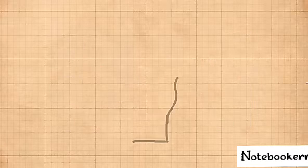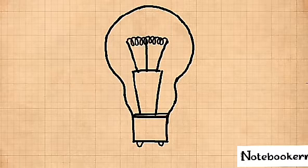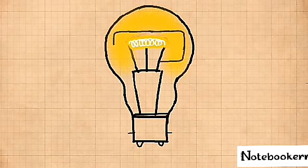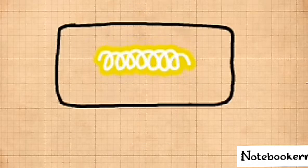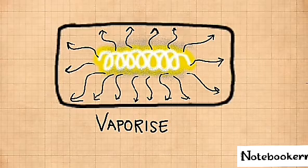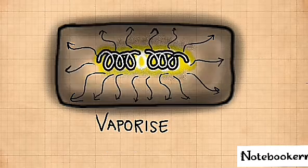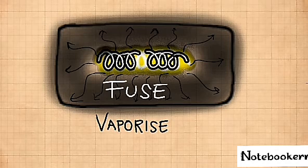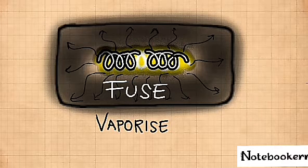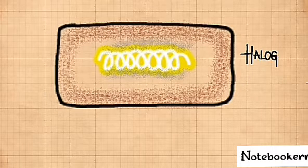The problem with this bulb is when the tungsten filament glows because of high temperature, it starts evaporating slowly and deposits on the inner wall of the glass. This blackens the bulb and causes the filament to grow increasingly weak until it eventually breaks or fuses. This problem can be solved by a small amount of halogens such as iodine or bromine.